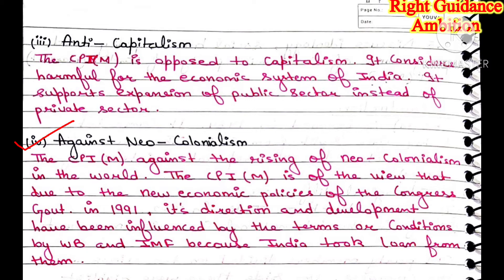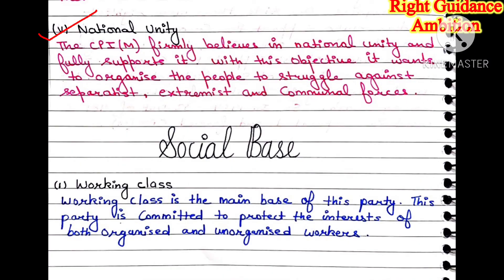CPIM opposes loans from international organizations or countries being used to make colonies of weaker nations. The fifth point is national unity. CPIM completely believes that India should always remain united and integrated. To achieve this objective, if there is any demand for separatism — whether someone claims to be separate from India, wants an independent part, or wants to join another country — CPIM completely opposes that movement.